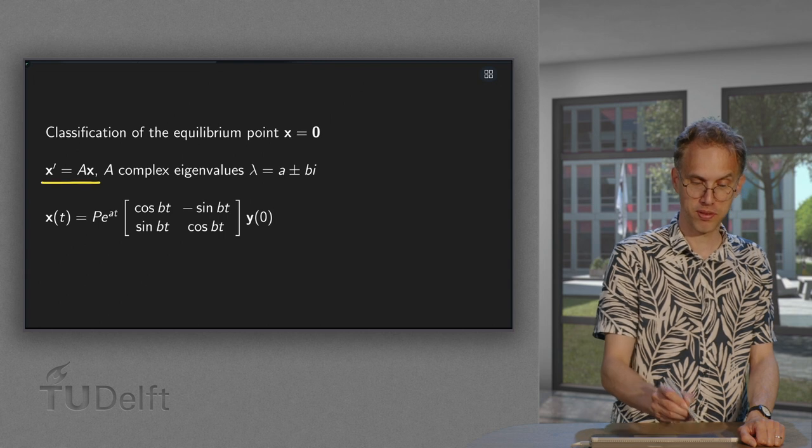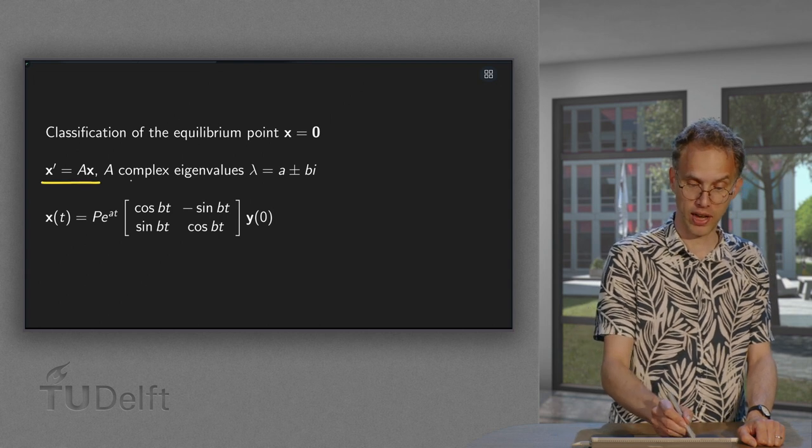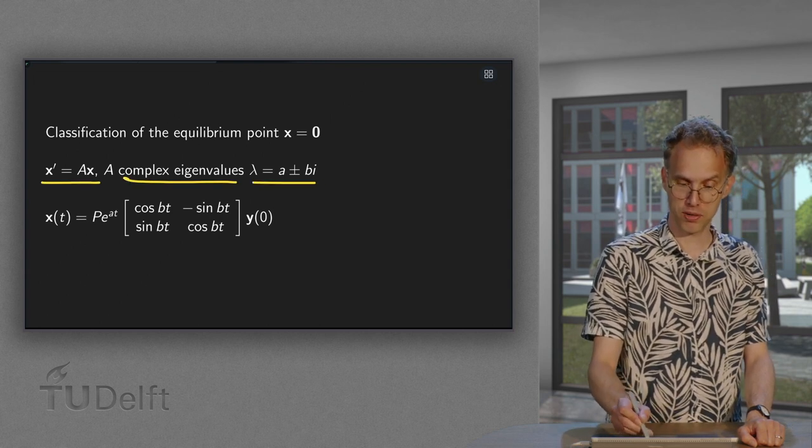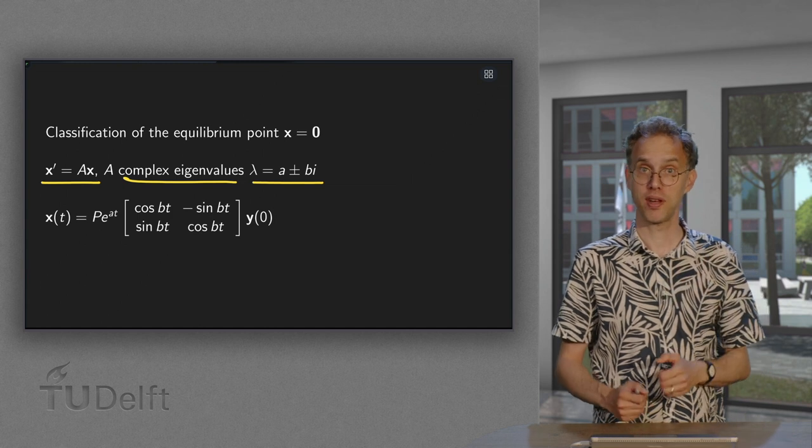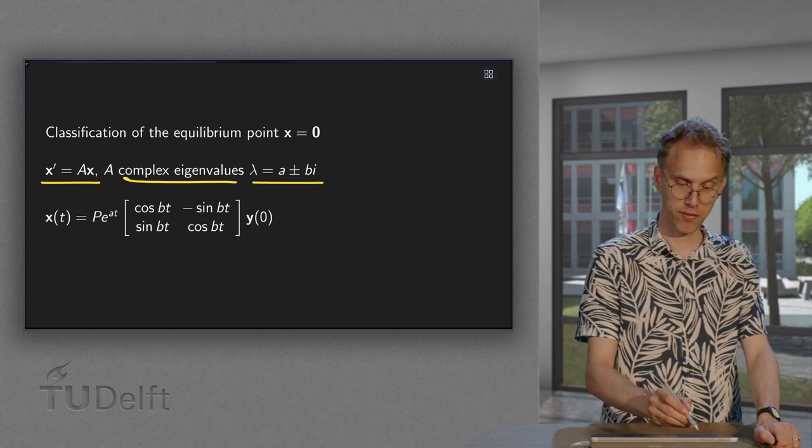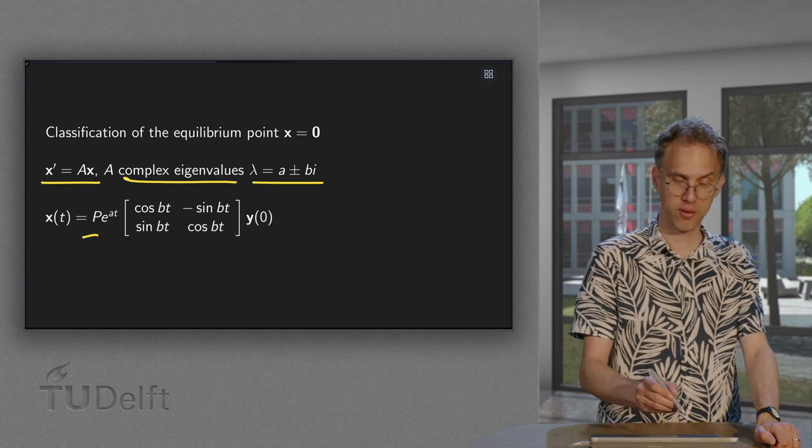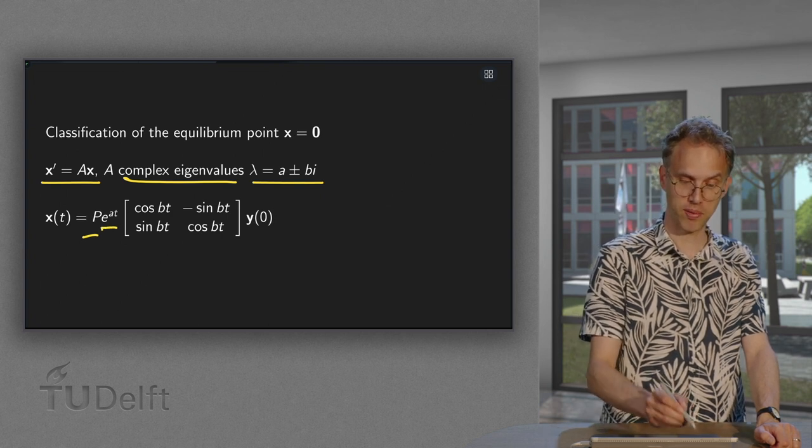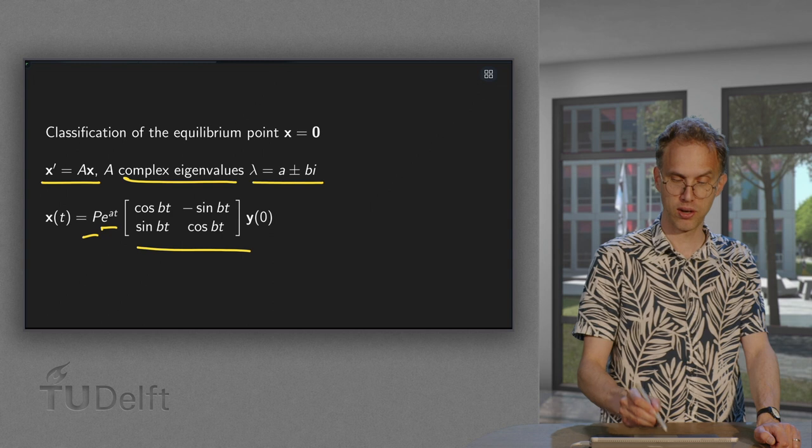So again, we have our x' = Ax. Now A has complex eigenvalues a ± bi. Pick one of them, so pick a + bi, then you can form your matrix P and you know that your solution can be written as e^(at) and here a rotation matrix.